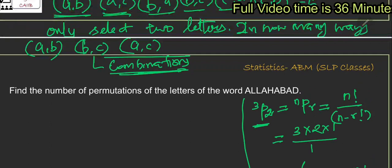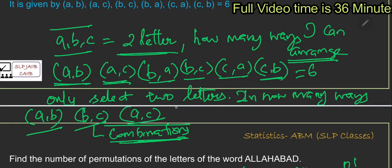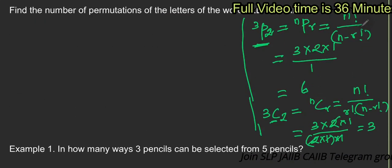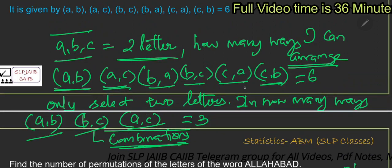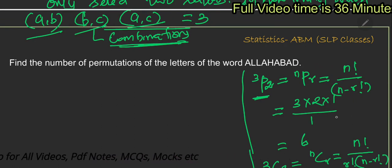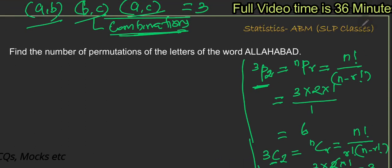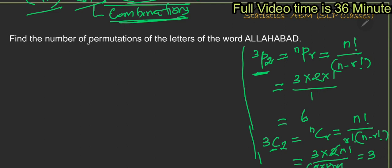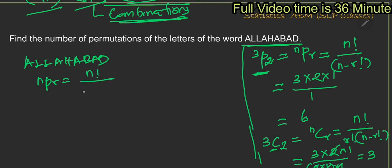We can list ABBCAC — there are 3 methods, so the permutation is 6. If you use NPR, which is n factorial divided by n minus r factorial, you will get the answer. Let's go ahead and look at a problem: find the number of permutations of the letters of the word Allahabad. The permutation formula is NPR = n factorial divided by n minus r factorial.